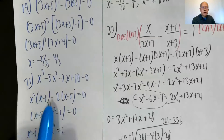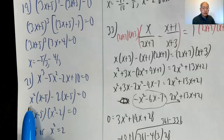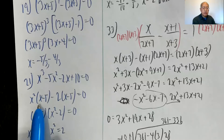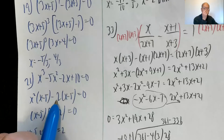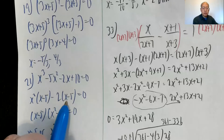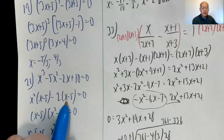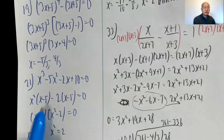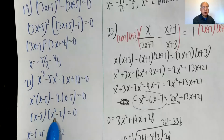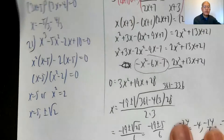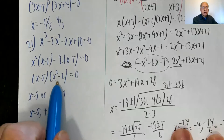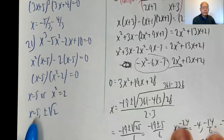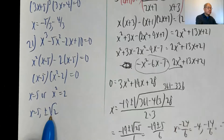Problem twenty-one: factor by grouping. From the first pair you can factor out an x squared, giving x minus five. From the next two you can factor out a negative two, also leaving x minus five. Factor out the x minus five and you have x squared minus two. That means x equals five, or x squared minus two equals zero, which means x squared is two, so x is five or plus or minus radical two.